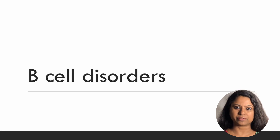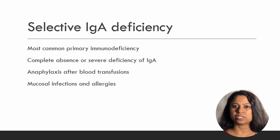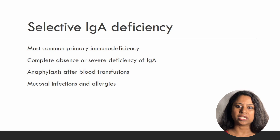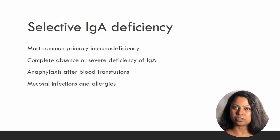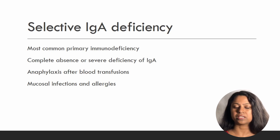Let's look at the B cell immunodeficiencies first. Selective IgA immunodeficiency is the most common primary immunodeficiency, characterized by a complete or total absence of IgA in the bloodstream. Since IgA provides mucosal immunity, such patients are prone to recurrent infections of the mucosal tract — for example, recurrent upper respiratory tract infections and recurrent GI infections causing diarrhea. Since such patients do not have IgA in the bloodstream, they should not be given blood transfusions or immunotherapy, because they may develop severe allergic reactions like anaphylaxis.